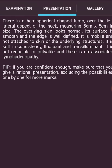There is a hemispherical separate lump over the left lateral aspect of neck, measuring 5 cm x 5 cm in size. The overlying skin looks normal. Its surface is smooth and the edge is well defined. It is mobile and not attached to skin or the underlying structure. It is soft in consistency, fluctuant and transilluminant.